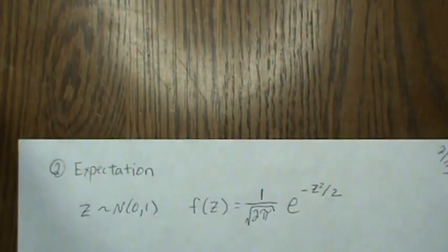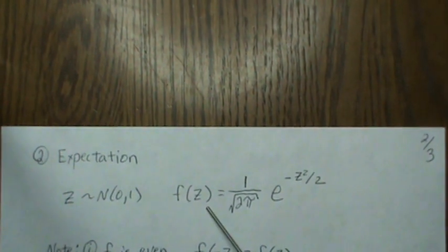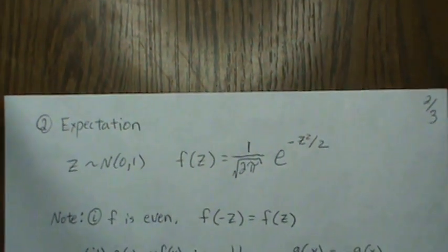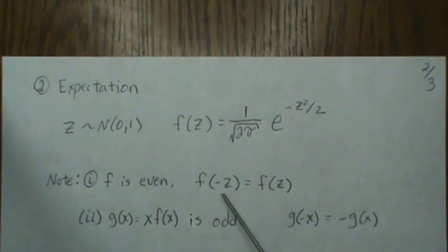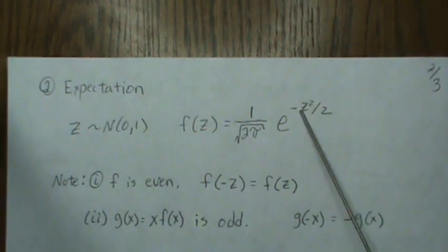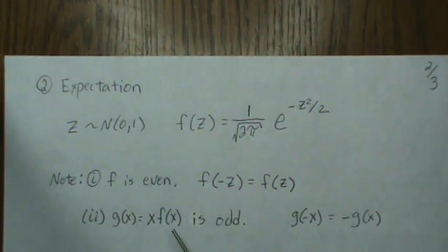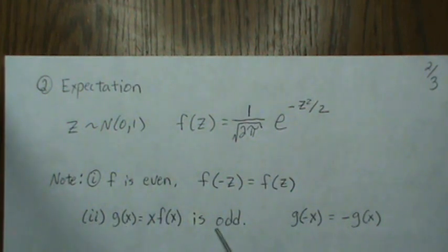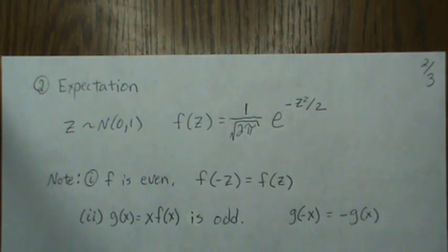So now let's look at these using expectation. This is our standard normal density. A couple of notes we will use: F is even, so if you plug in minus Z, since that's squared it cancels out and we just get F of Z back. And then if we let G of X equal X times F of X, then G of X is odd, which says if you plug in a negative, it's the negative of G of X. And when you integrate odd functions, nice things happen.